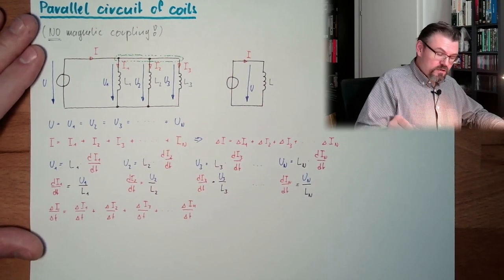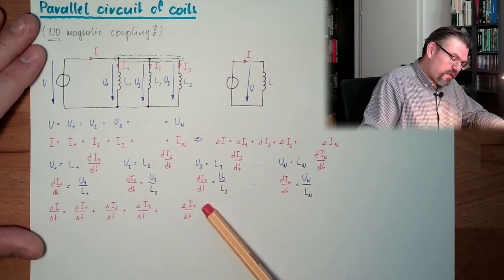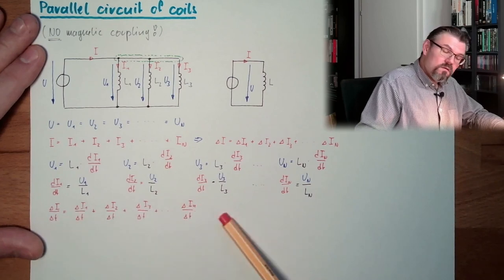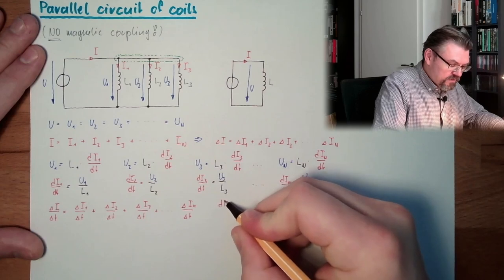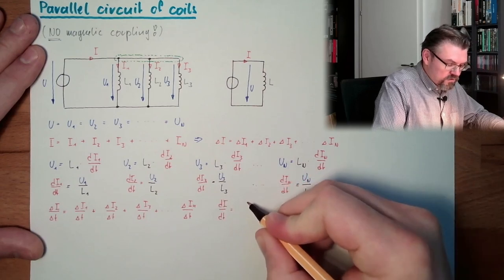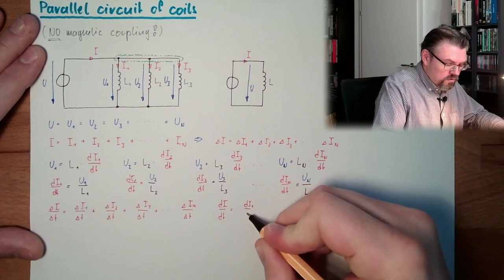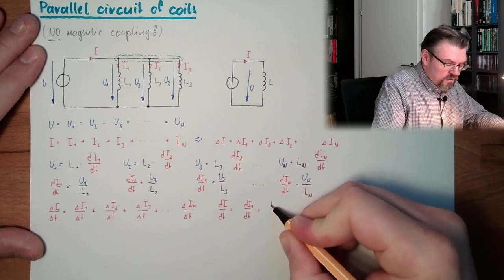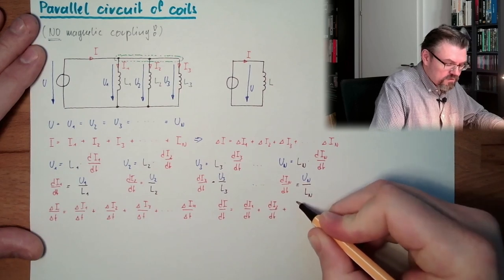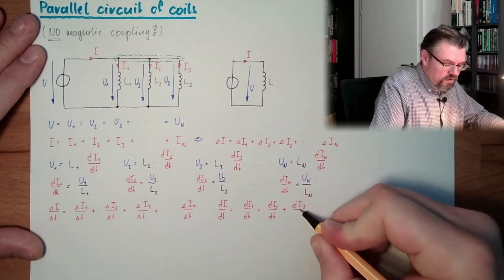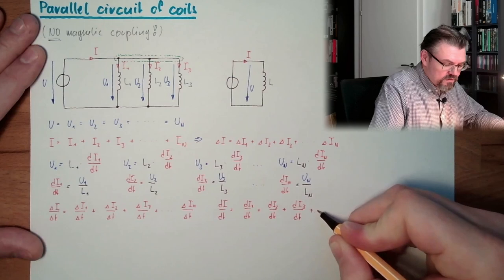Now, I make an infinitesimal change, so I think that those deltas are small, very small. So, what is actually written there is dI dt equals dI1 dt plus dI2 dt plus dI3 dt plus, and so on.